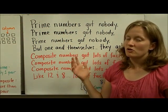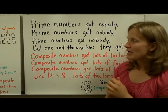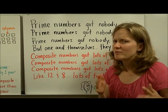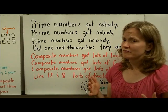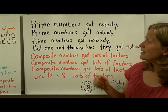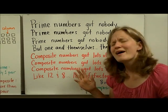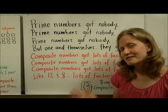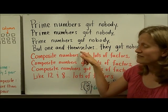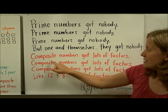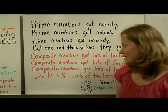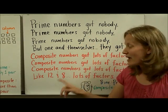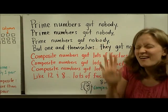And of course, I have a song for everything. So I have a song about prime numbers. And you have to excuse the grammar. I know it's not exactly right. It's after this song. You might have to look it up on YouTube. Ask your parents about short people. It might sound a little familiar. So here it goes. Prime numbers got nobody. Prime numbers got nobody. Prime numbers got nobody but one and themselves. They've got nobody. Composite numbers got lots of factors. Composite numbers got lots of factors. Composite numbers got lots of factors like 12 and 8. Lots of factors.